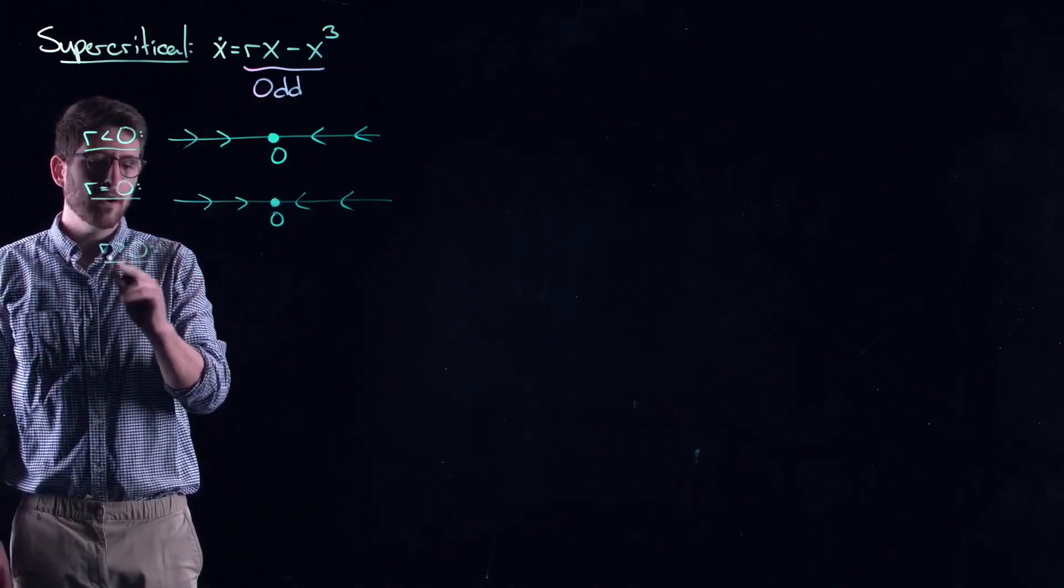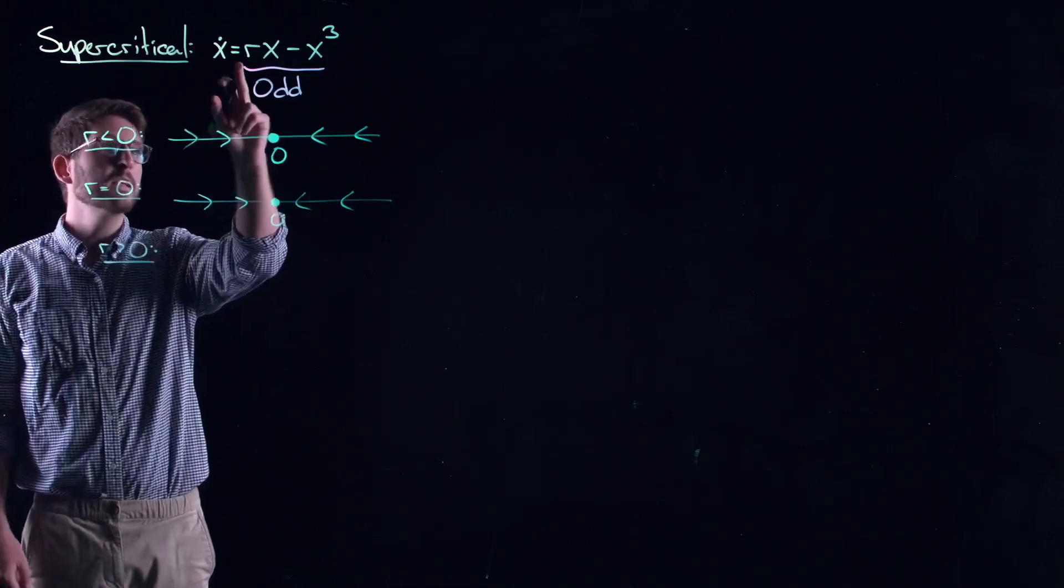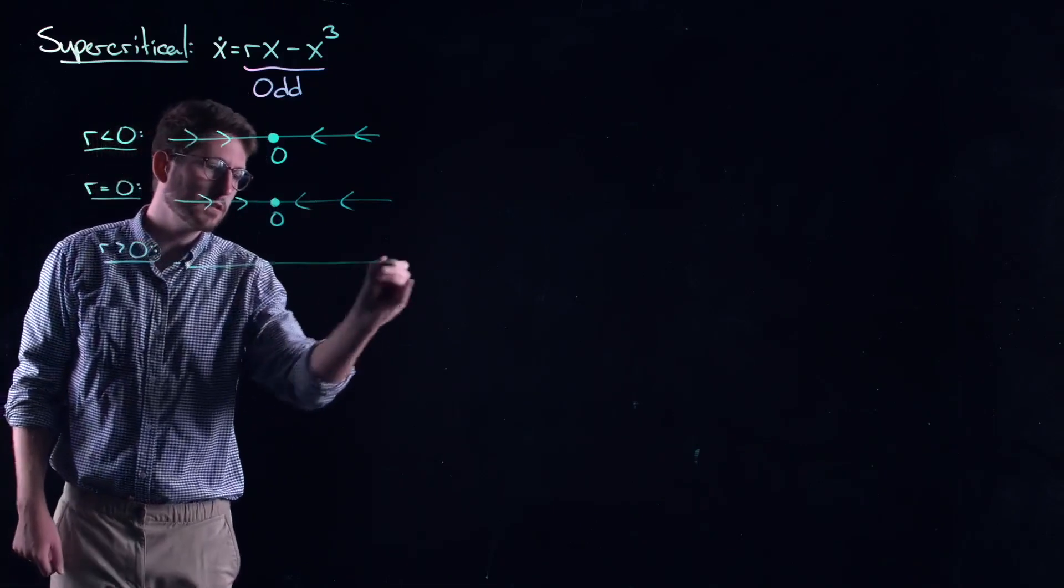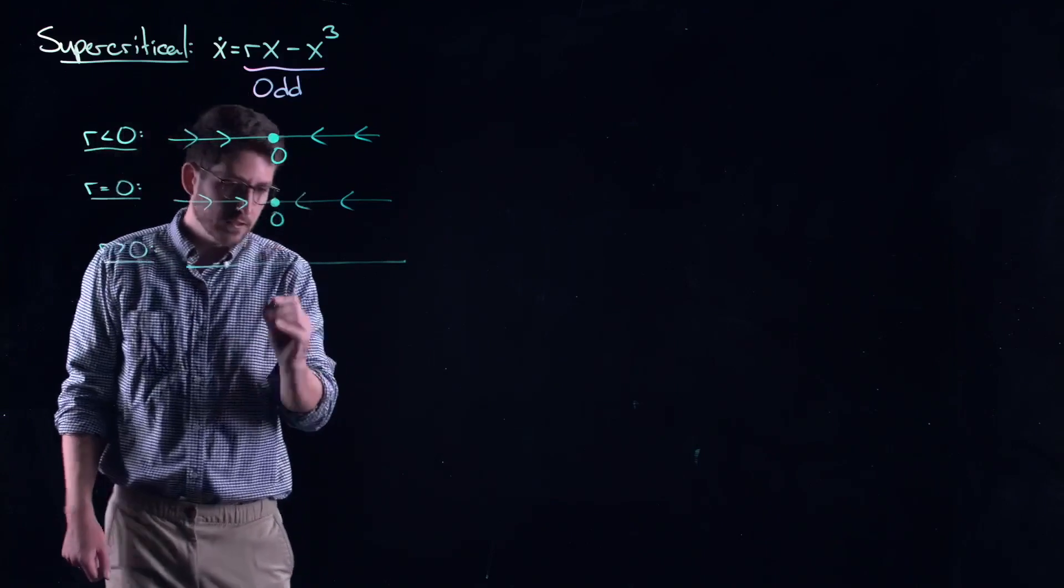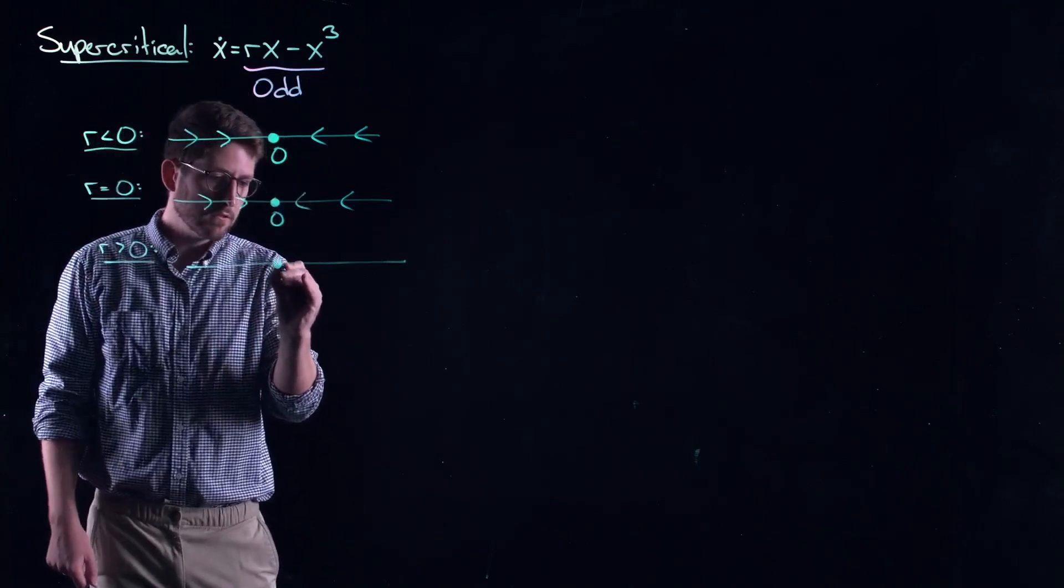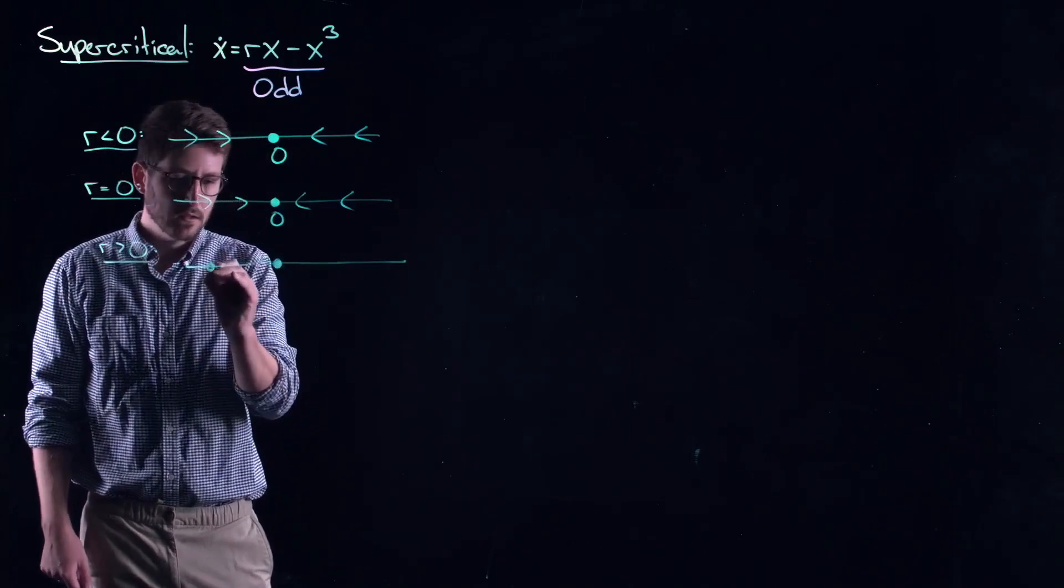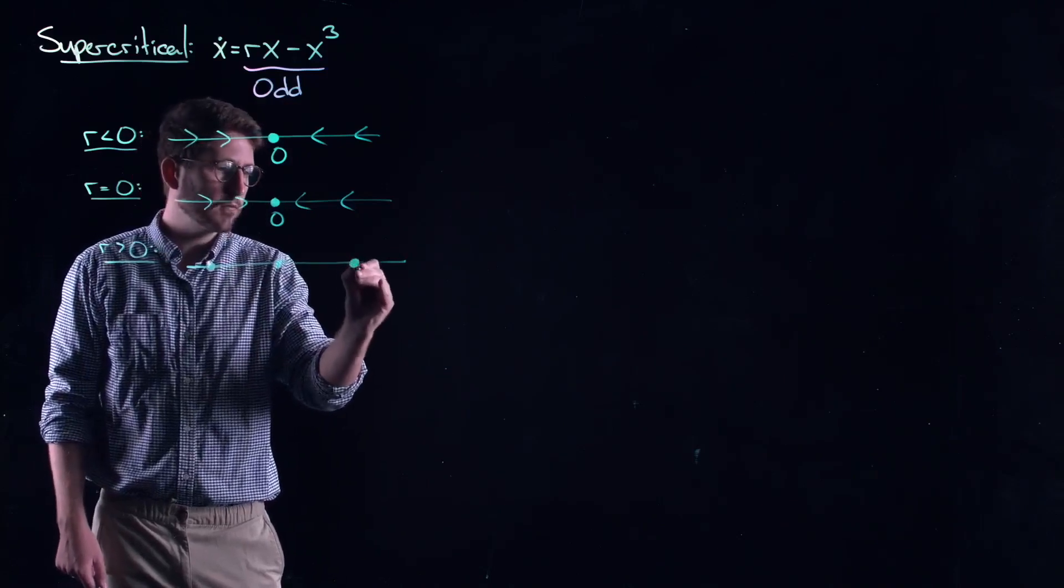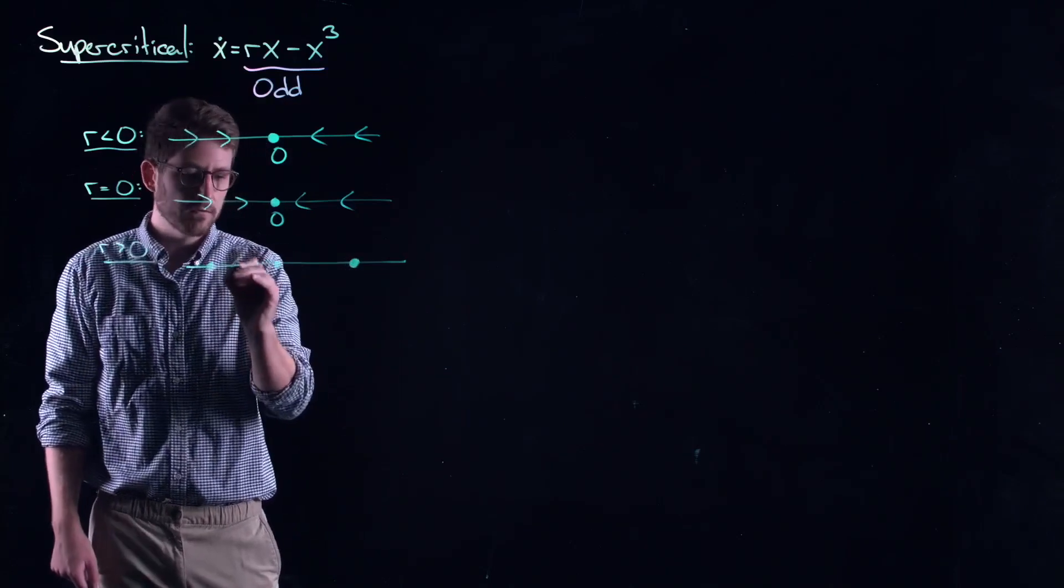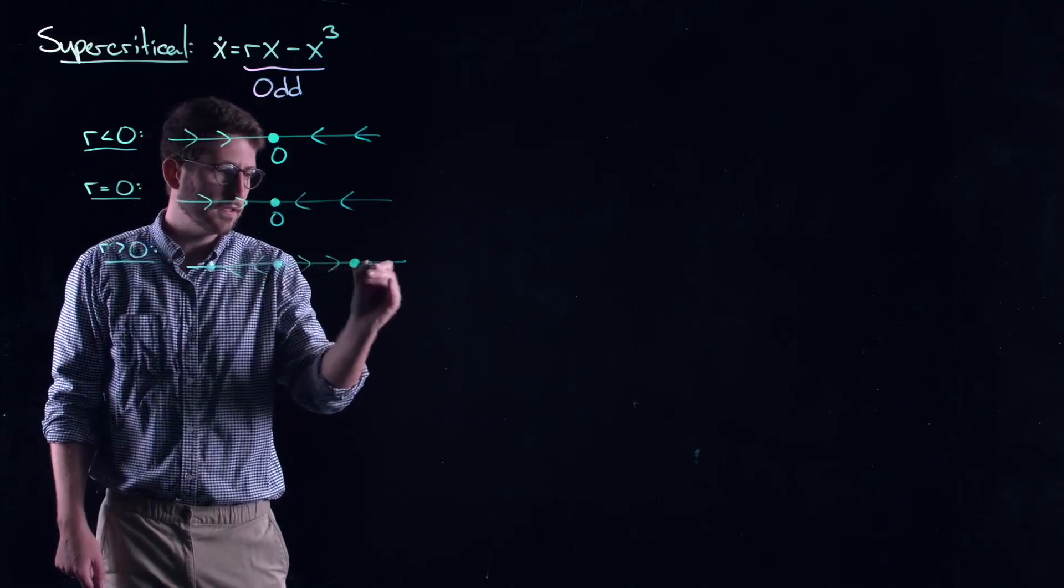And if r is bigger than zero, this thing now has three roots to it. In particular, zero becomes unstable. And these two branches, the square root of r, plus or minus the square root of r, take its stability.